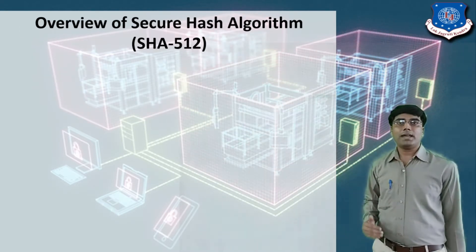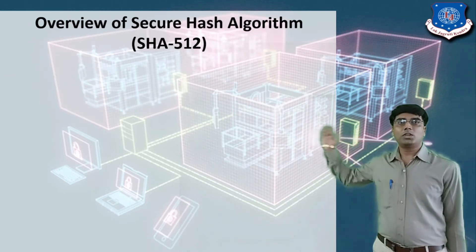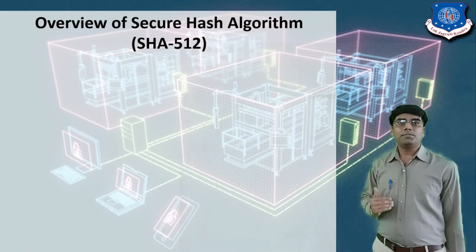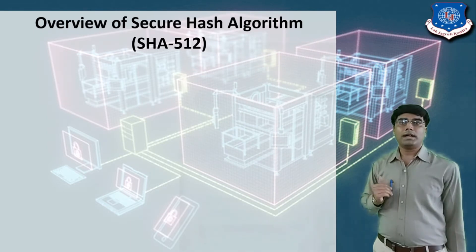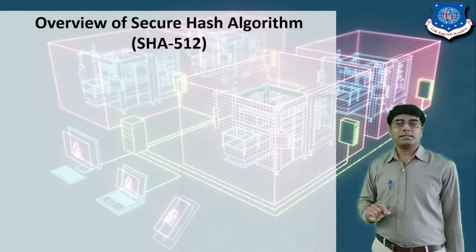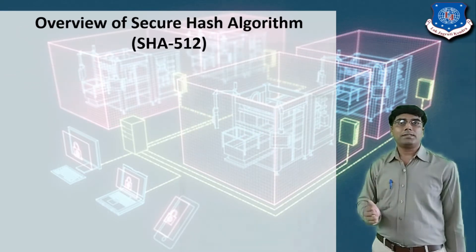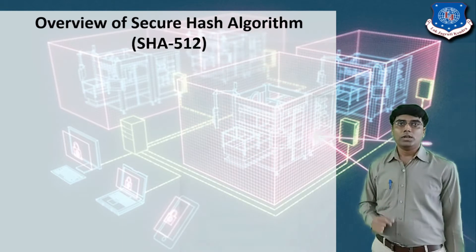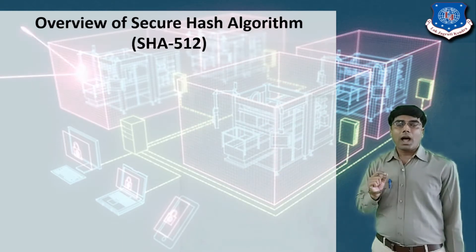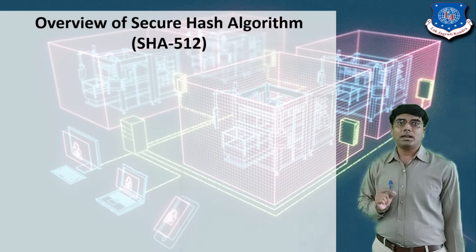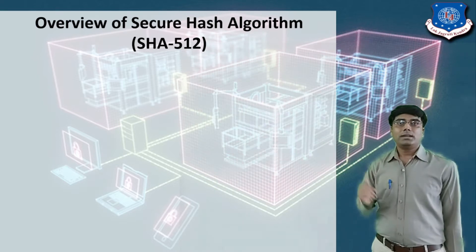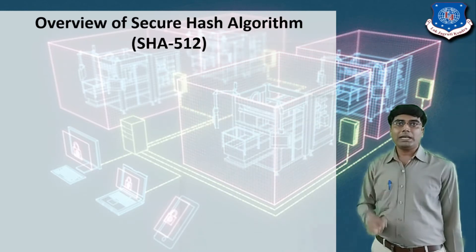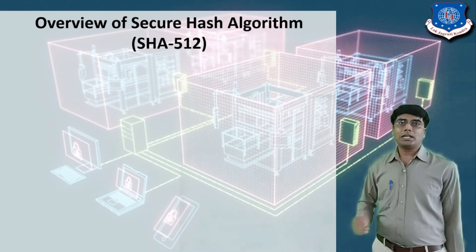The first question in your mind is: why do we use the Secure Hash Algorithm? As we have already seen the hash function in the previous two sessions, when we apply the hash function on a plain text message it generates a fixed length code. With this fixed length code we can identify whether the sender and the receiver are authenticated persons or not.